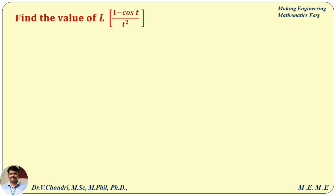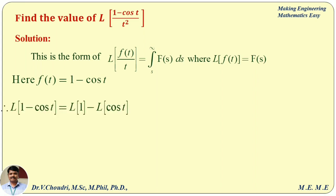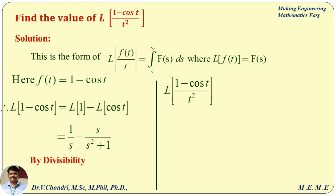Now a new example with t power 2. Find the value of L of (1 − cos t)/t². This is of the form L of f(t)/t², so f(t) = 1 − cos t. The Laplace transformation of (1 − cos t) is 1/s − s/(s² + 1). Applying the division formula: L of (1 − cos t)/t² equals a double integral from s to infinity of L of (1 − cos t) ds ds.